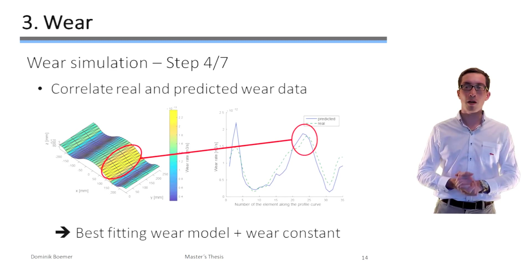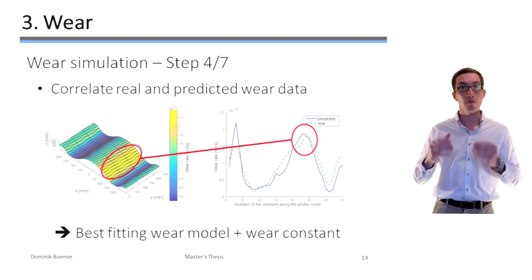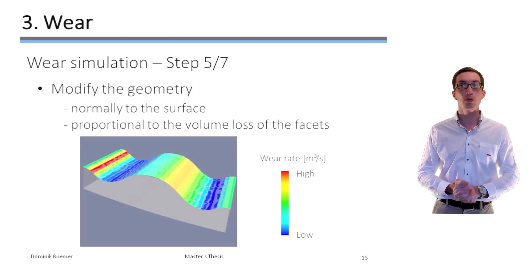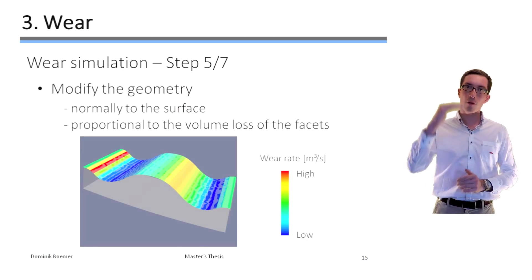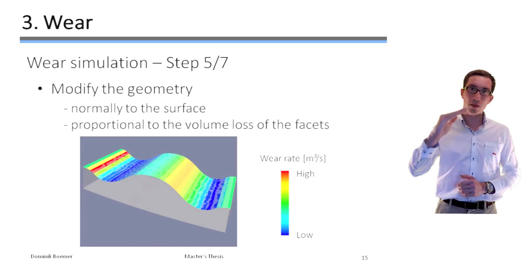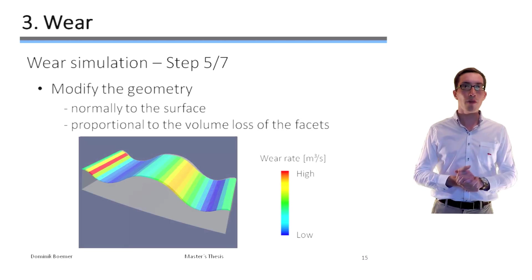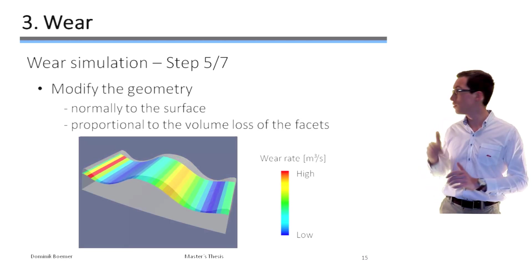So for this reason, we can now determine the volume loss of each facet by the simulation. And if we know this volume loss, the next logical step is to modify the geometry in order to take into account this volume loss below each facet. This is why the surface is displaced normally to itself by an amount which is proportional to the predicted volume loss of the respective facets. So let's take a look at the modification of the geometry.